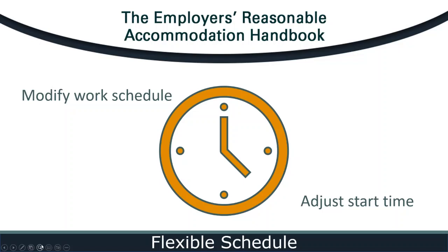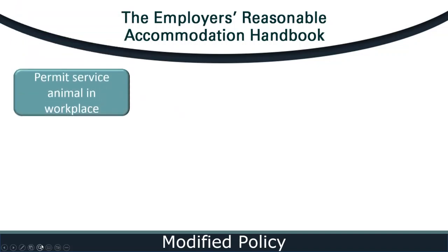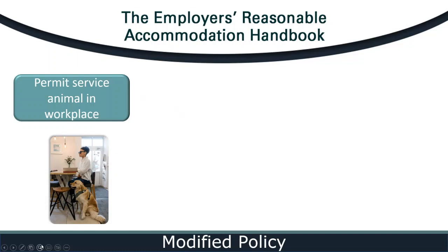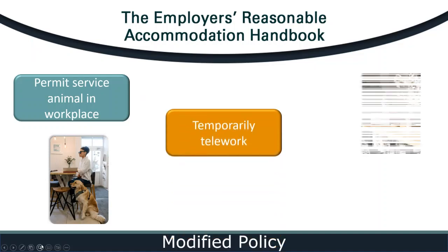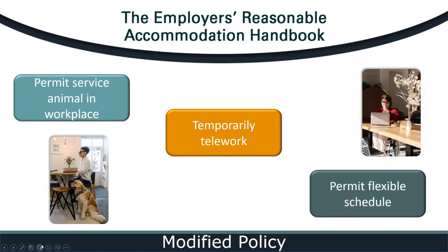What kinds of policies could an employer consider altering as a form of reasonable accommodation? I want to remind employers that just because a rule is part of a policy, it doesn't mean that rule can't be modified. For example, an employer may have a no animal policy, and as a reasonable accommodation may need to modify this policy to permit an employee with a physical disability to utilize their service animal, which may assist with functions like balance, walking, and transporting items. Another example could be modifying a hybrid workplace policy to permit an employee to temporarily telework full-time while their wheelchair is being repaired or while their service animal is being trained. And allowing a flexible schedule reasonable accommodation may require a modification to an attendance policy.